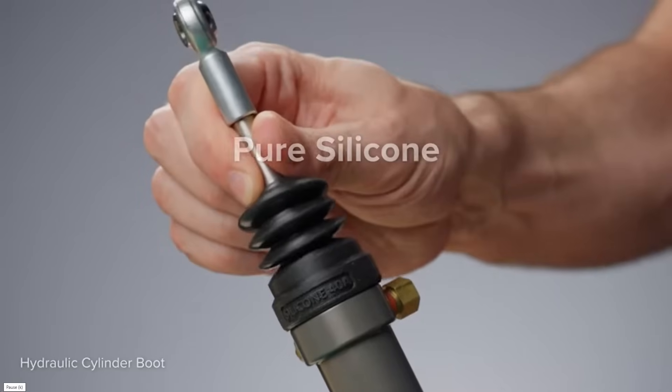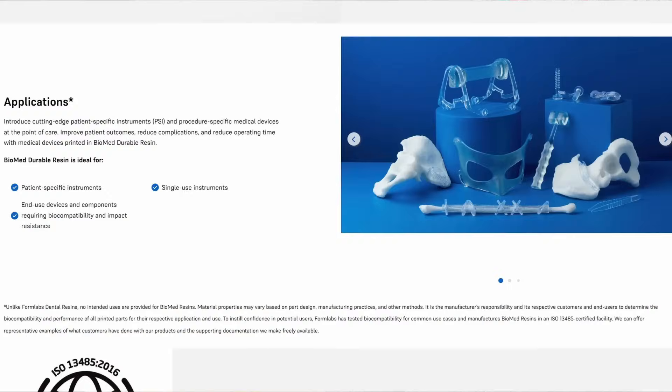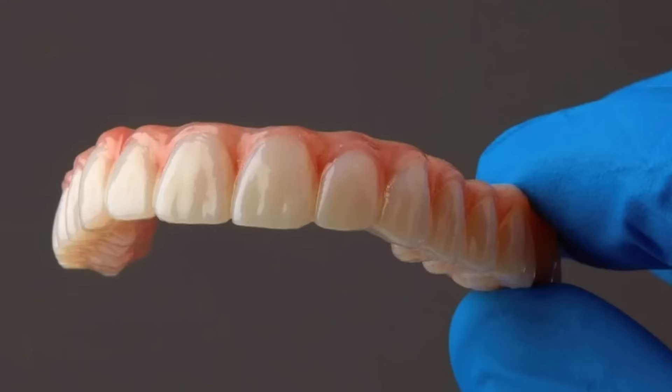Imagine a 3D printer that can print anything you want. Tough car parts, soft rubber, clear lenses, surgical equipment, fake teeth, even ceramics.